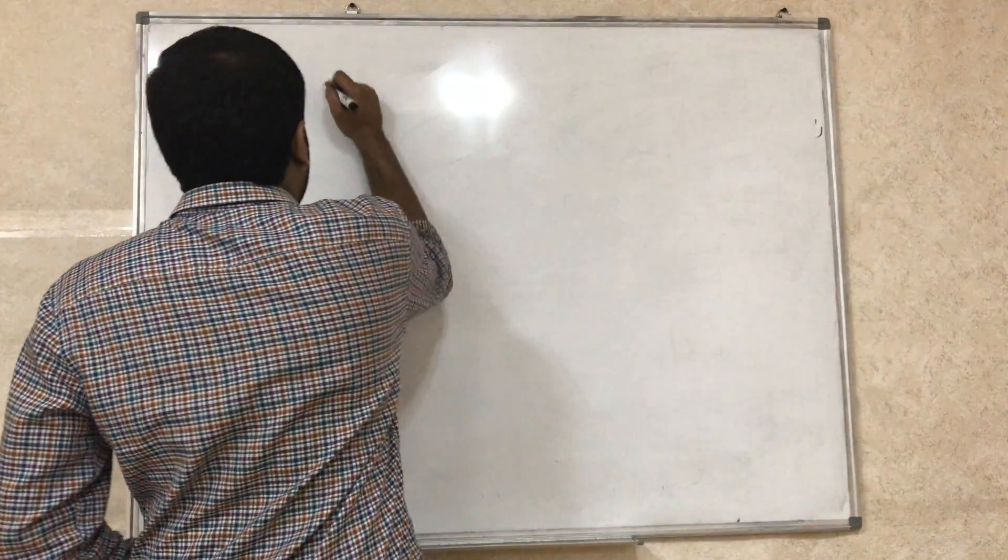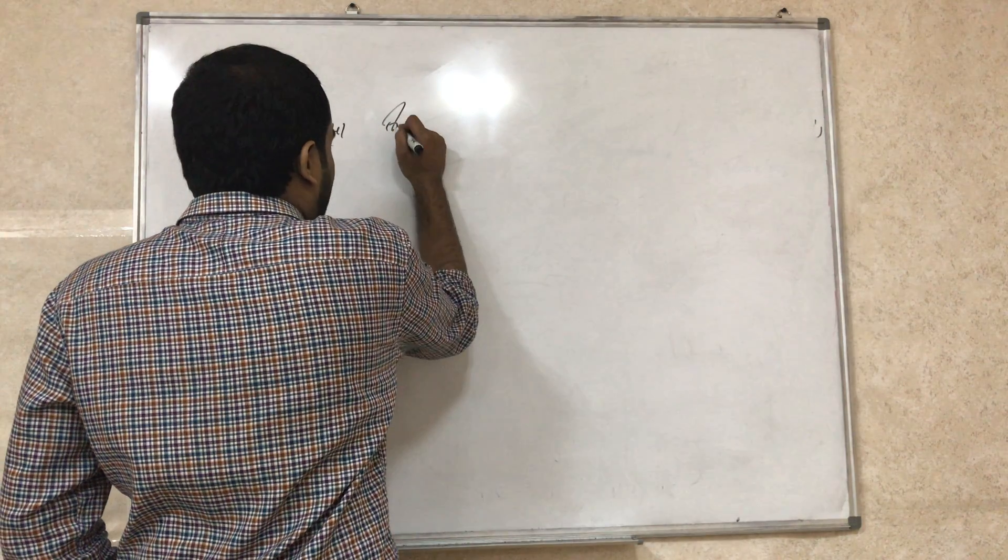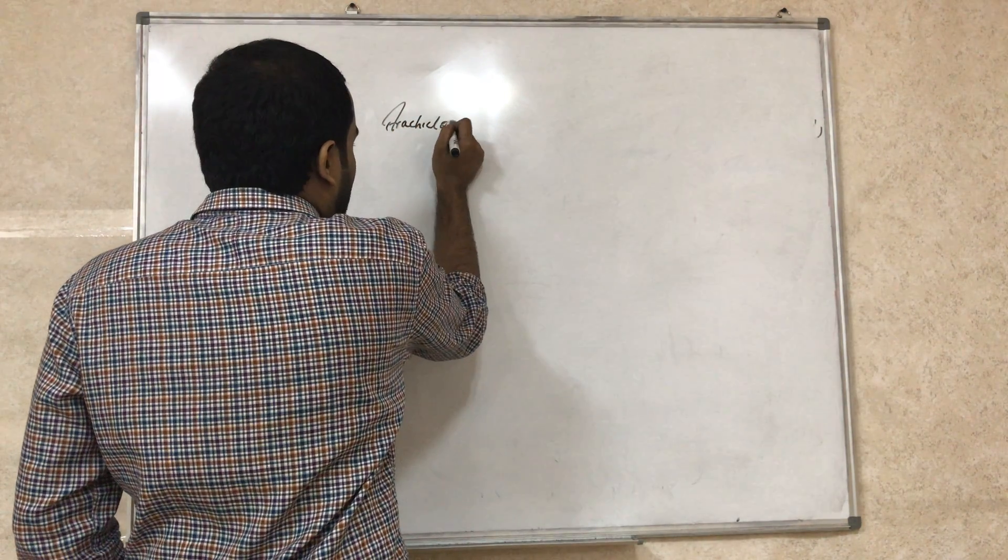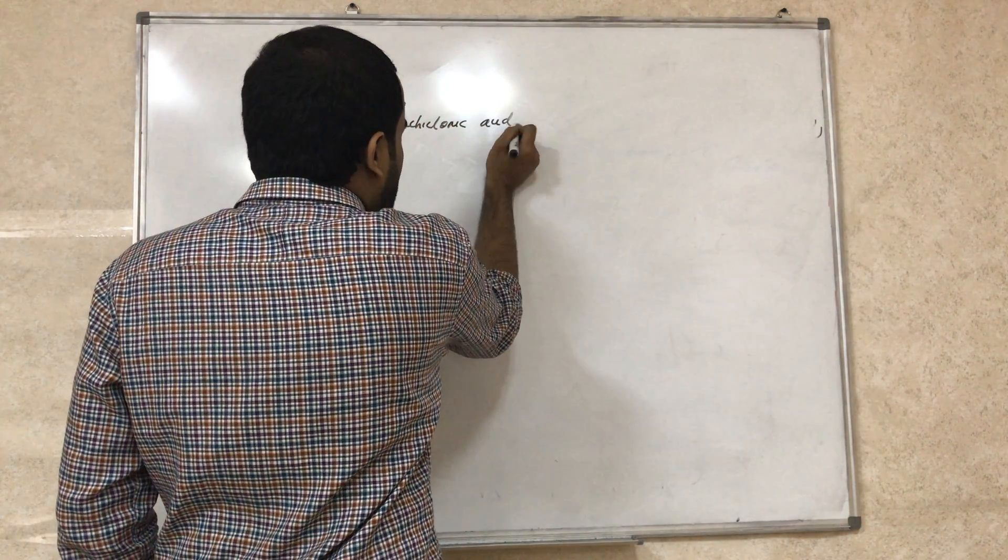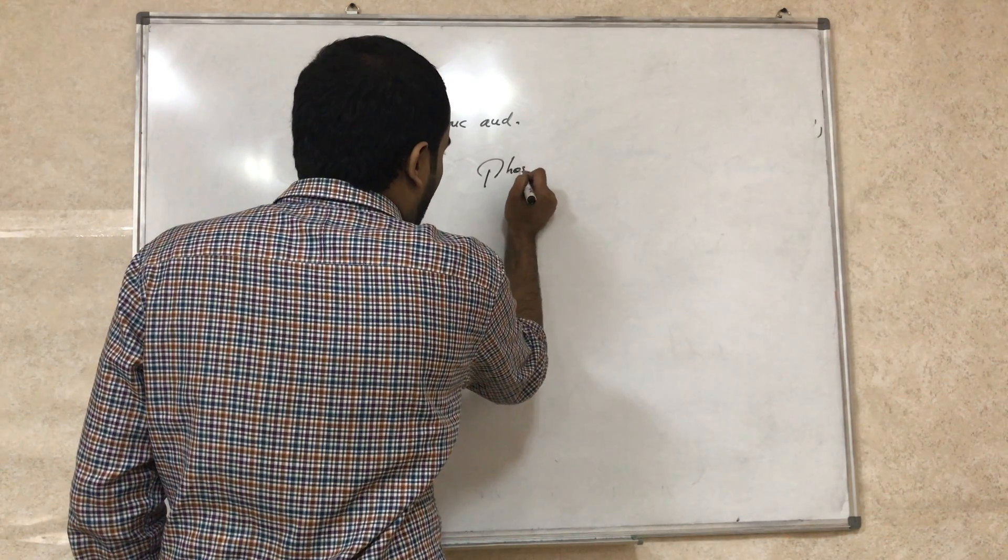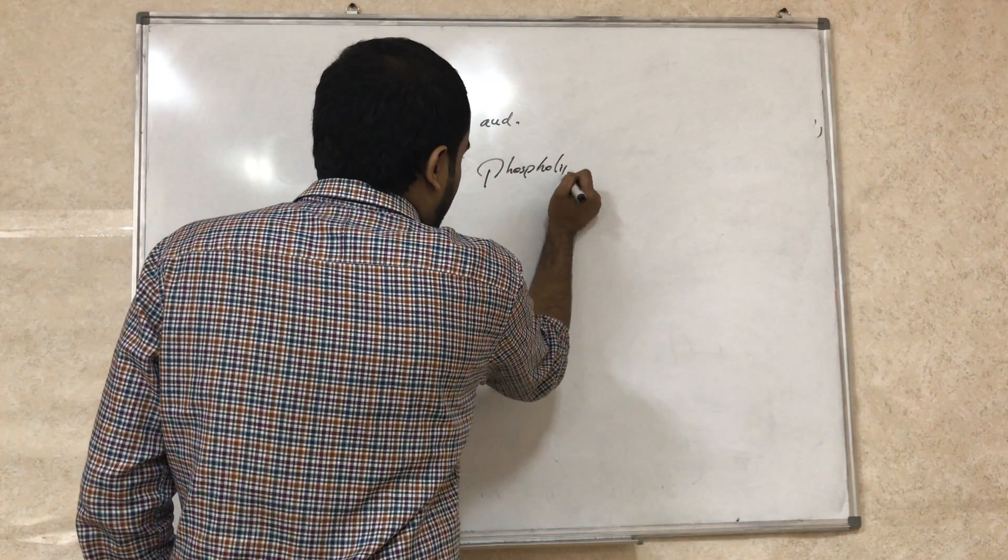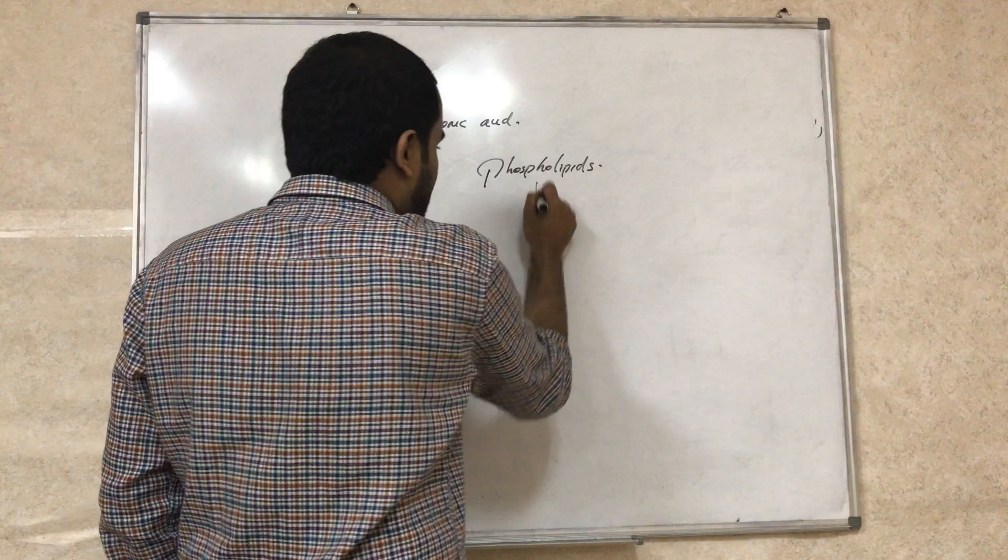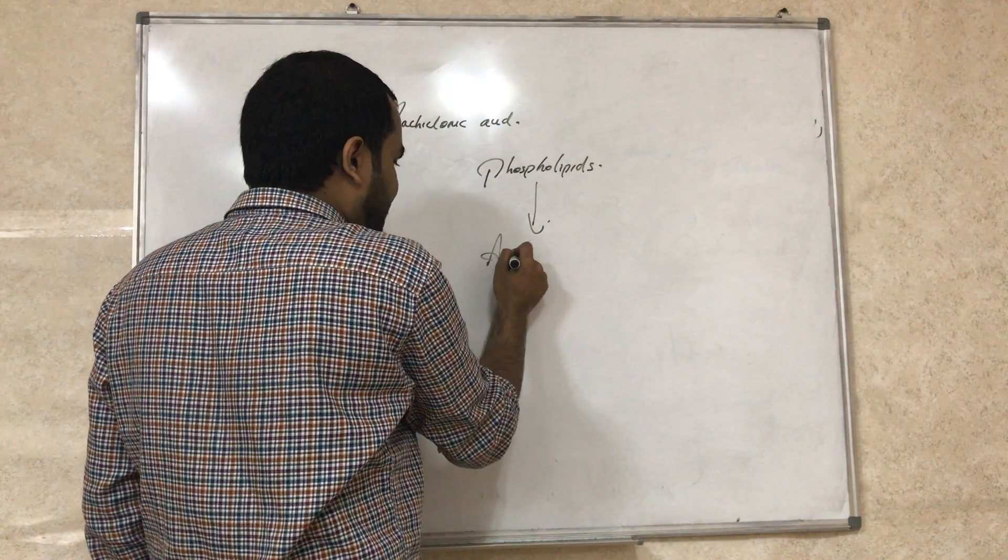Now, the next mediator is arachidonic acid. So we will see arachidonic acid metabolism. All our cells are made of phospholipids, right? Phospholipids.